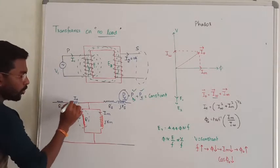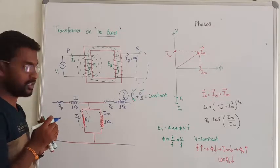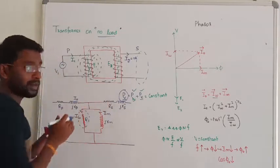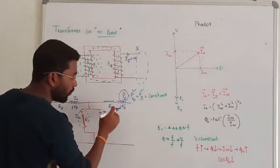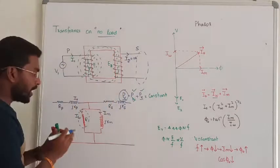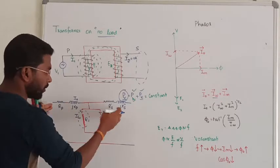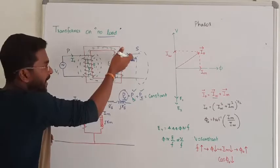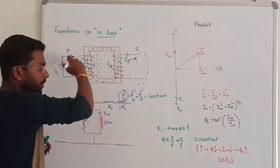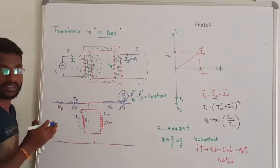This is the electrical equivalent circuit of the transformer. The transformer is electrically isolated between primary and secondary. To connect the secondary and primary in the equivalent circuit, we have to transform the secondary resistance and reactance to the primary side. We divide the secondary resistance by k-squared, and reactance is also divided by k-squared, giving us rs-prime and xs-prime.